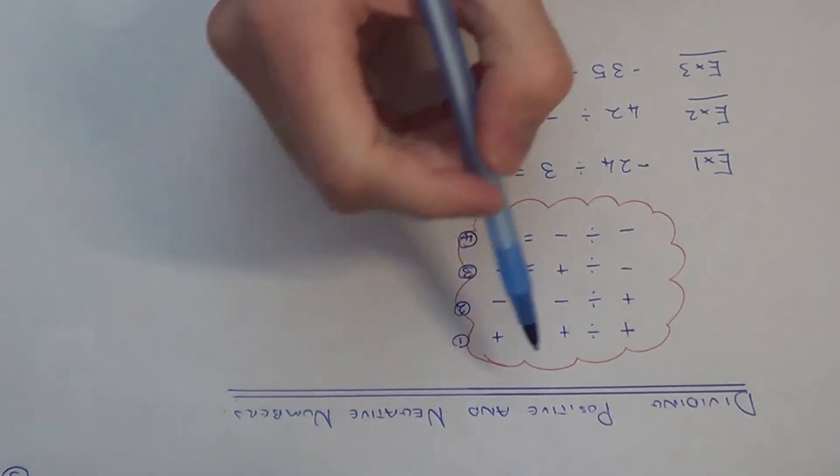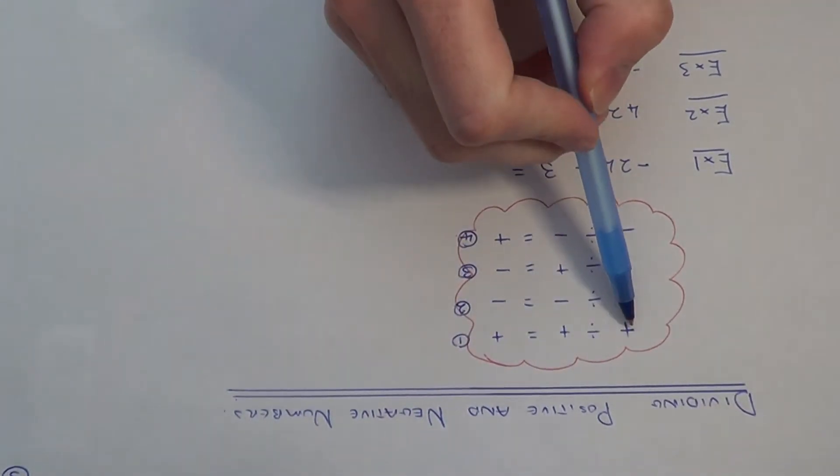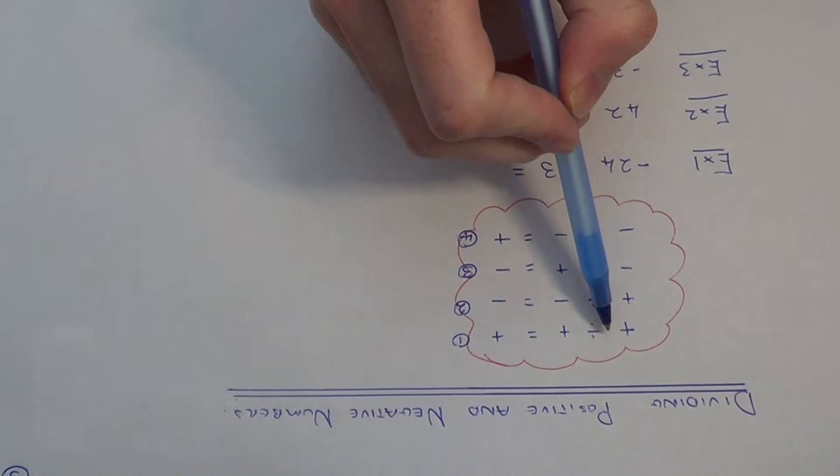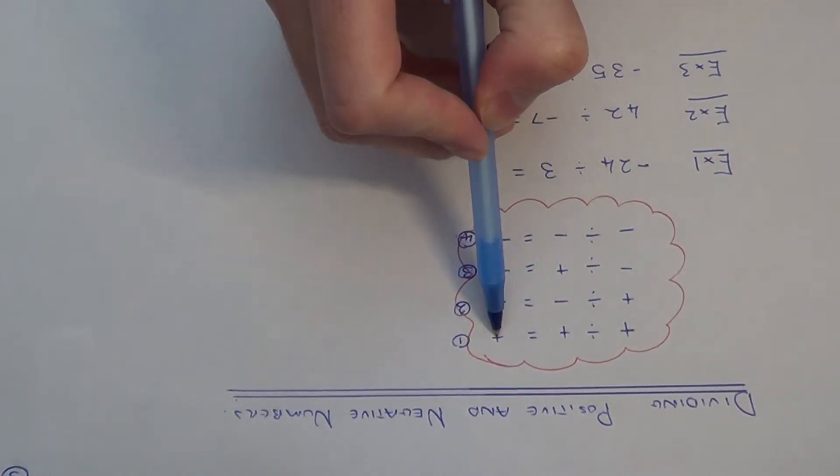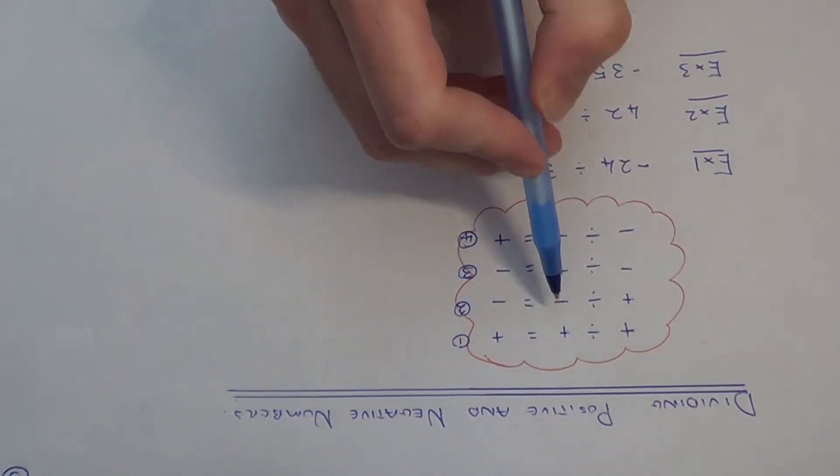Rule one: if you divide a positive by a positive, you get a positive answer.